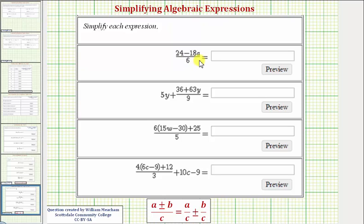We want to simplify each expression. Our first expression is the quantity 24 minus 18a divided by 6. Notice in this case we're dividing by a single term or a monomial. So whenever we're dividing by a monomial, we divide each term in the numerator by the denominator.